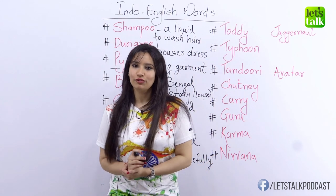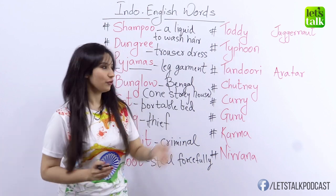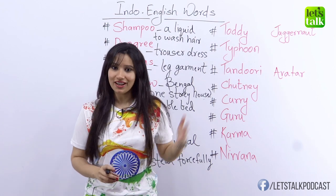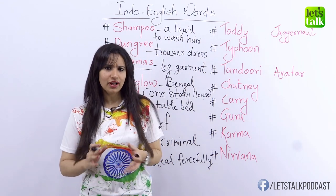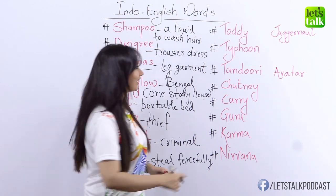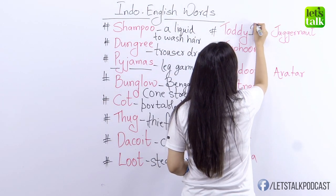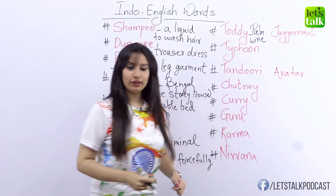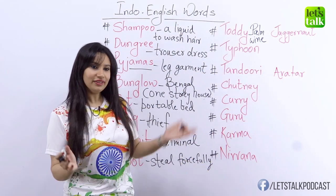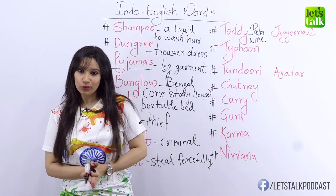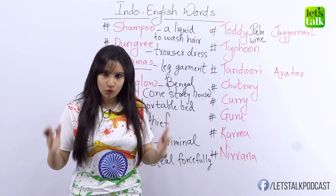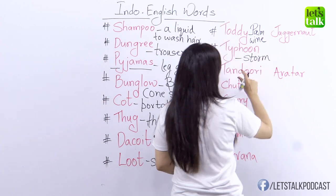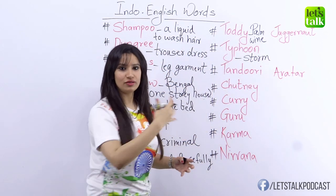If you are fond of drinking, you must know the word toddy. It's a special kind of wine found in the south of India — it's called palm wine and is not very high in alcoholic content. Are you afraid of typhoons or cyclones? The word typhoon actually comes from the Hindi word 'thufan,' which means a strong storm, a cyclonic storm.